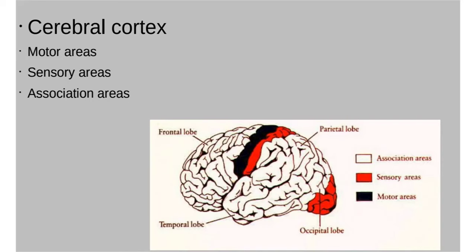The cerebrum is divided into a left and right portion, each called a cerebral hemisphere. The outer portion of the cerebrum — the outer two to four millimeters, about an eighth of an inch — is called the cerebral cortex. The cerebral cortex is where your conscious mind is. Anything that you choose to do, think about, or understand — that's your cerebral cortex at work.